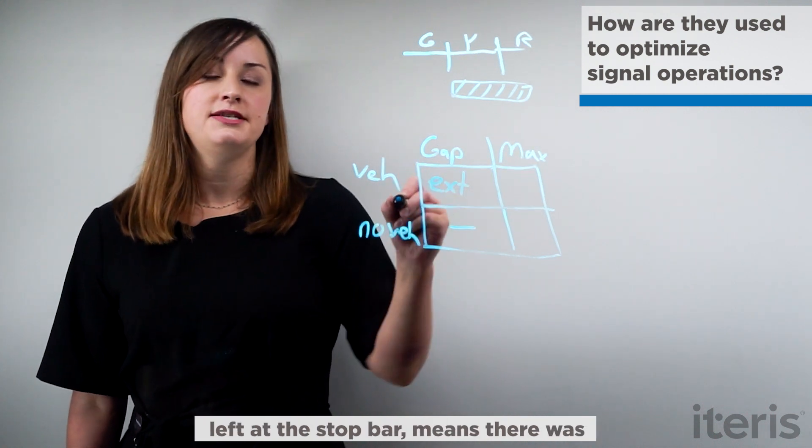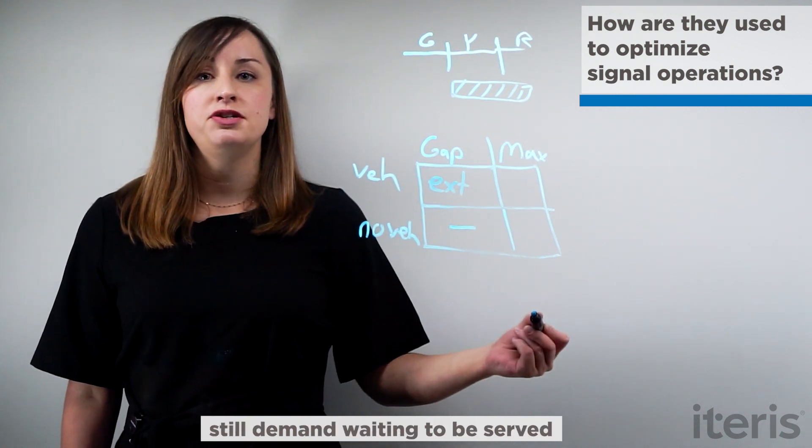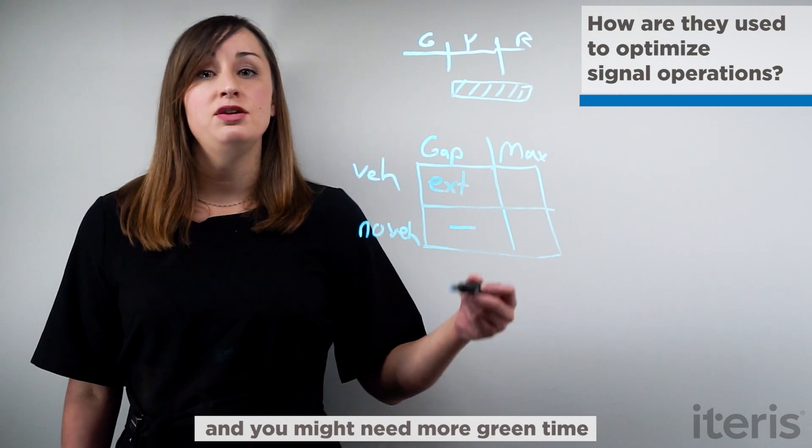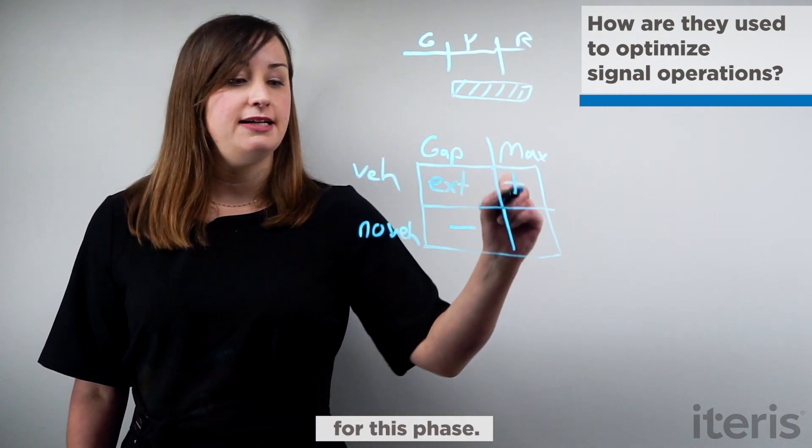Now a max out with a vehicle left at the stop bar means that there was still demand waiting to be served and you might need more green time for this phase.